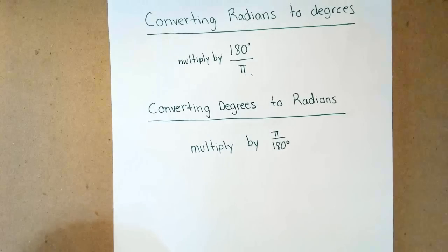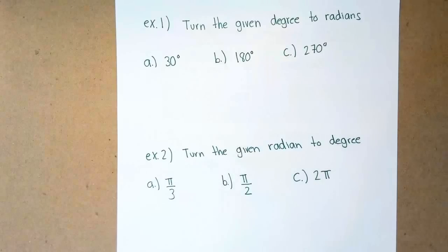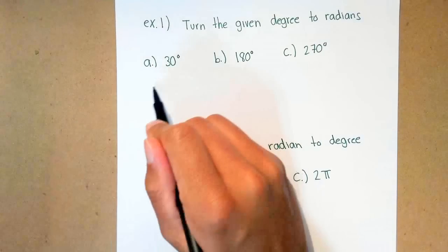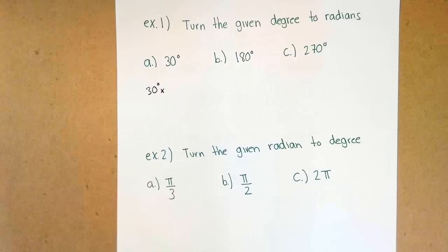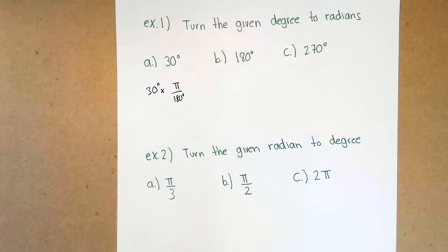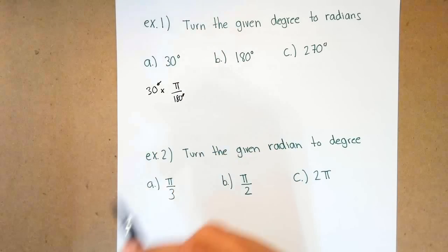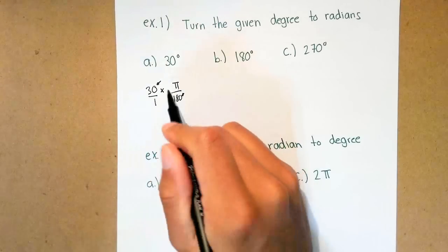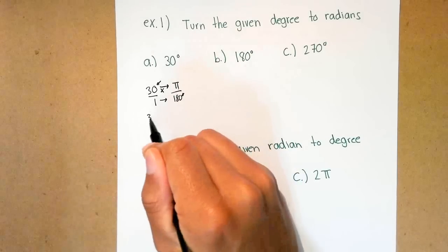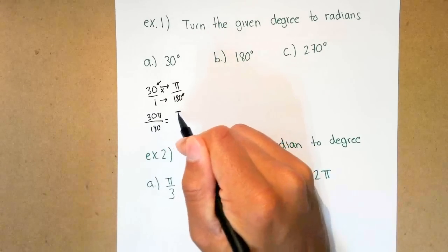Let's go ahead and do a couple of examples. In our first example, they want us to turn a given degree into radians. I'm going to multiply by pi over 180. The reason you can do that is because in math, in order for units to cancel out, they have to be on opposite sides. So the degree symbol cancels out, which leaves us in terms of pi. I'll put it over 1 and multiply across, giving me 30 pi over 180, which simplifies to pi over 6.